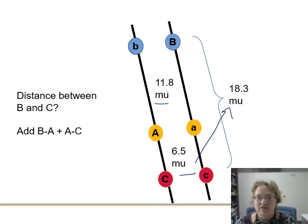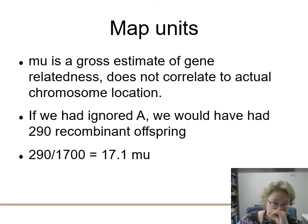So map units is just kind of an estimate of gene relatedness, not correlated to actual chromosome location, but it does tell us where things are in relation to each other, which is very useful and how far apart they are. If we ignored A, we would have just had 290 recombinant offspring, and that gets us pretty close. So the others are 290. It's 17.1 mu. But that's not paying attention to the gene that's in the middle. It's underestimating the distance a little bit.